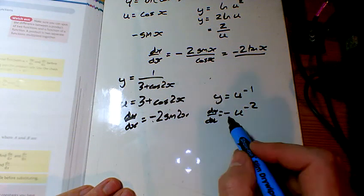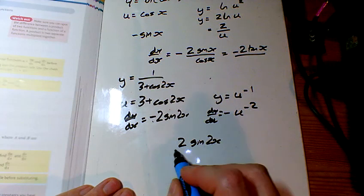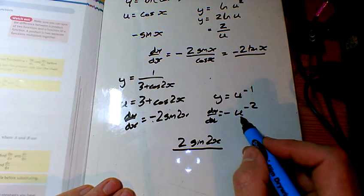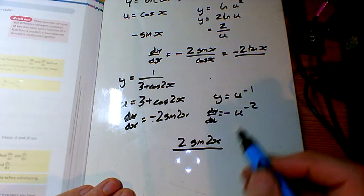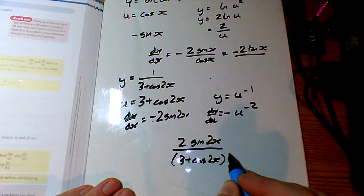And multiplying them together, the two minuses cancel out. I've got 2 sine 2x on the top, and u to the power of minus 2, so I'm putting that on the bottom squared.